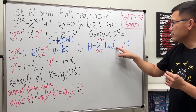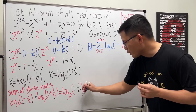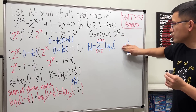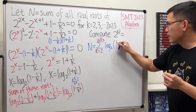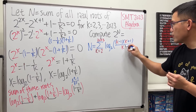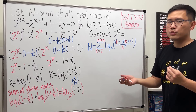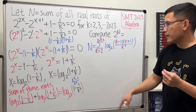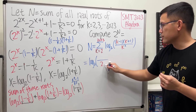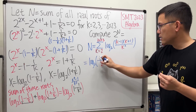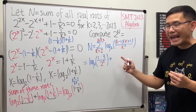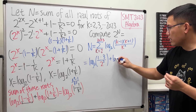Let's get a common denominator: 1 minus 1/k² becomes (k² minus 1)/k², and factoring the numerator gives (k minus 1)(k plus 1) over k². To see why this telescopes, let's write out a few terms. When k equals 2: log₂(1 times 3 over 2²). When k equals 3: log₂(2 times 4 over 3²).